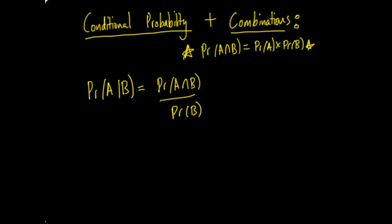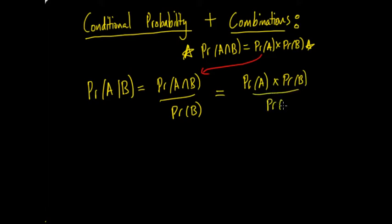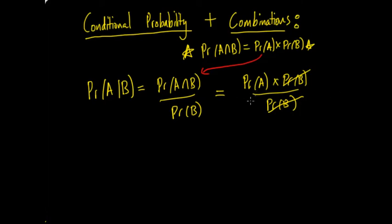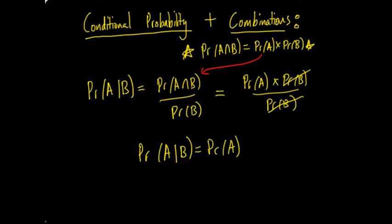Substituting in, the P(B) values cancel, and we're left with just the probability of A. So for independent events, P(A|B) equals P(A), which makes sense — the whole definition of independent events is that whether B occurs or not, it doesn't affect A.